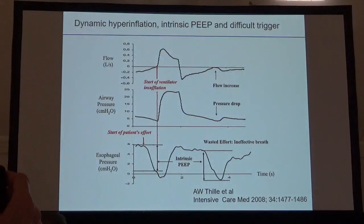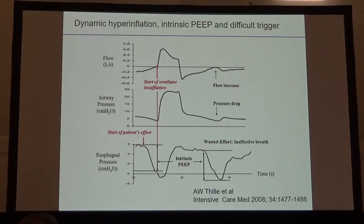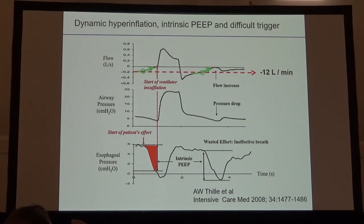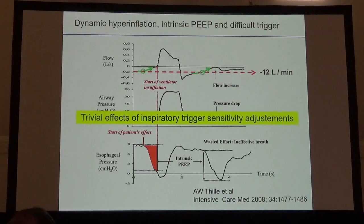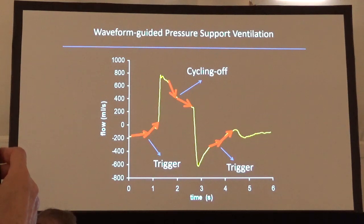The leading cause of difficult triggering is dynamic hyperinflation. In this case, the patient effort starts when the expiratory flow is still ongoing. We can detect this problem by looking at waveforms, but we cannot set a negative value of expiratory flow as a threshold for the inspiratory trigger. So, to further improve synchronization, we have to move from thresholds to waveforms — in other words, ask the ventilator to open the inspiratory valve as soon as this positive deflection of flow is detected.